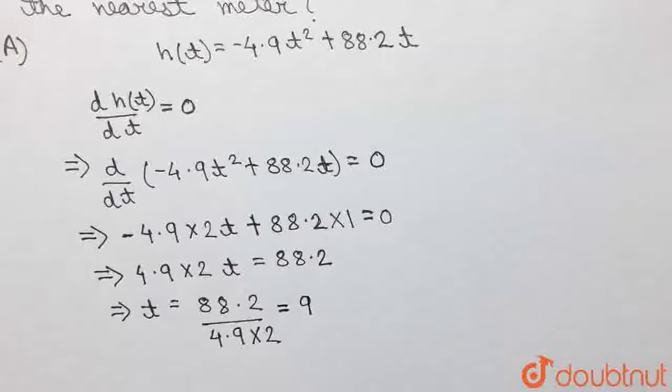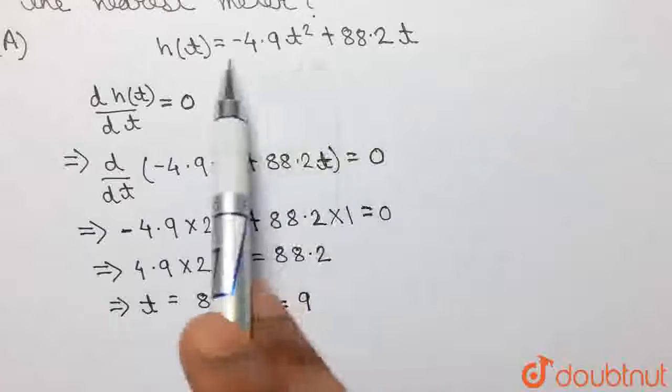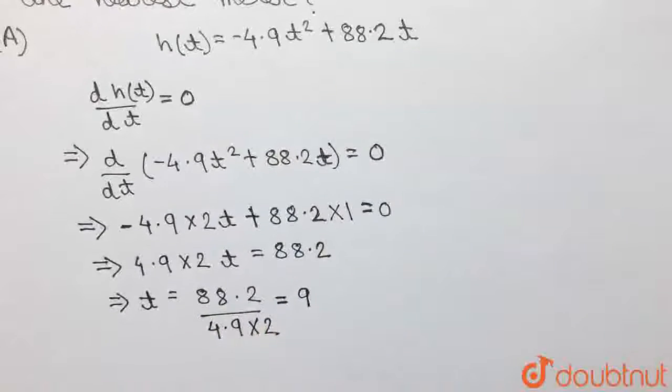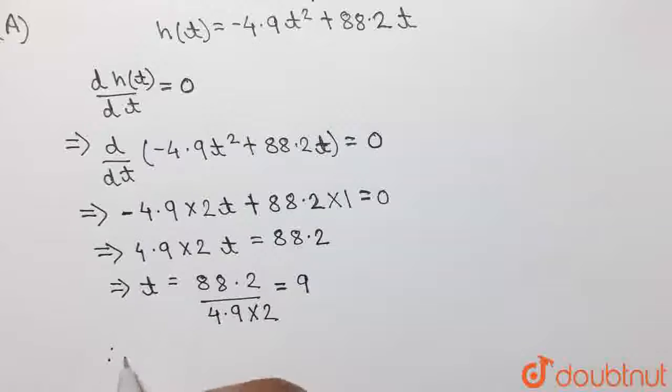So, from this we can conclude that when t = 9, the projectile will reach its maximum height. So, in order to find the magnitude of the maximum height, all we have to do is substitute t = 9 in this formula. So, the maximum height in meters will be given by substituting t = 9.